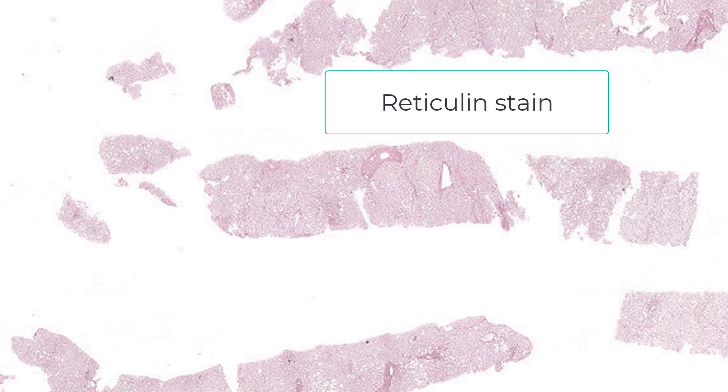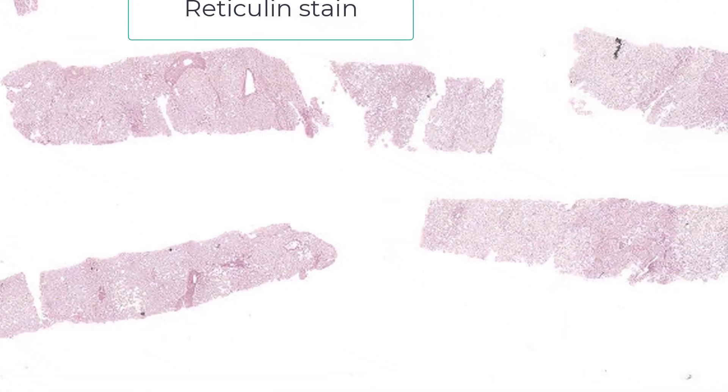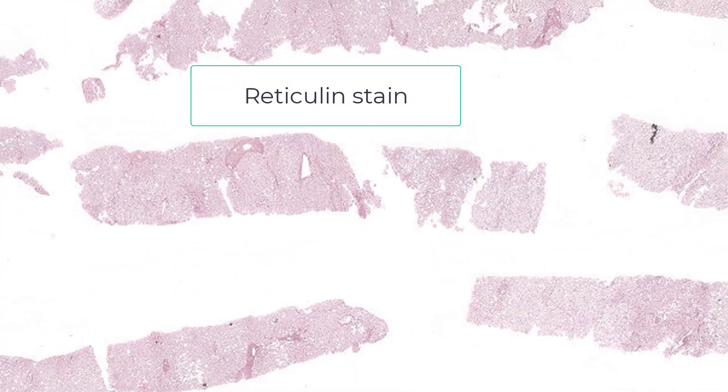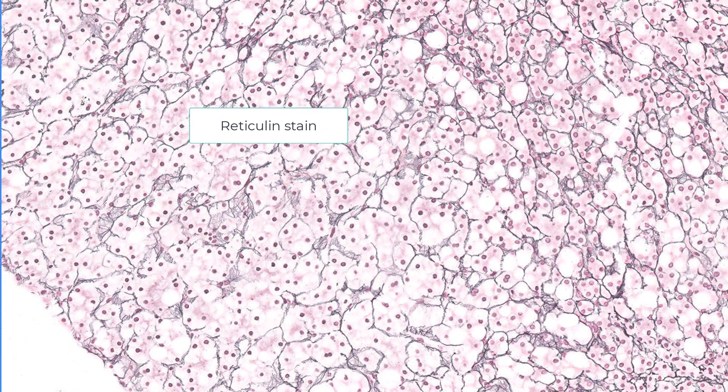Even though I think this is probably benign, I almost always get a reticulin stain. You can see it is intact in the adjacent liver, but it's also intact in the adenoma. I know it's somewhat hard to see at very low power. Here's a higher power view — you can see that virtually all of the cells are encased by these reticulin fibers. You often see loss of reticulin fibers when you see fat, but if you have very little fat like this, the reticulin framework remains intact.